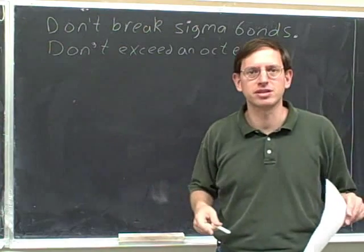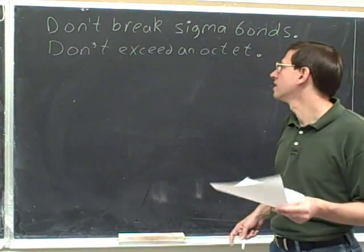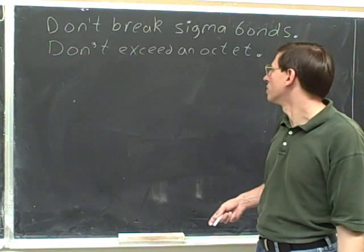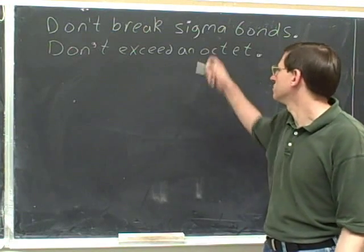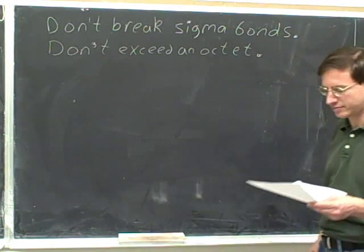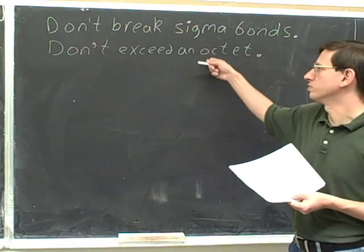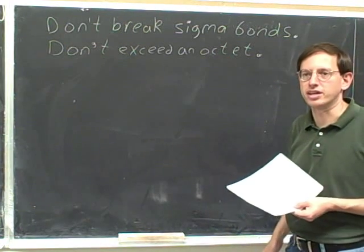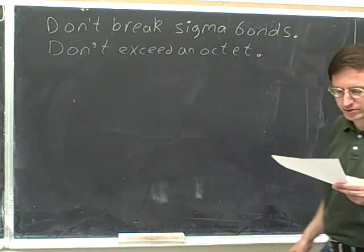Except for atoms in the third period and below, when you're doing resonance — or really any type of electron pushing arrow — you don't want to exceed an octet. This rule is not just true for resonance, but also for reaction mechanisms.